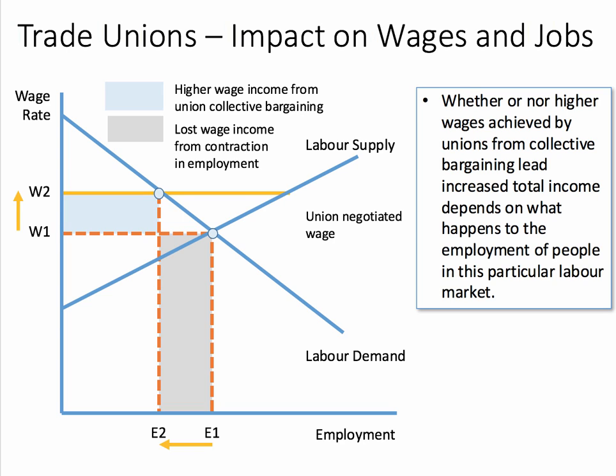So we have two areas here: the blue area showing the higher wage income from collective bargaining, in this case more than offset by the decline in employment shown in the grey area as employment contracts from E1 to E2.